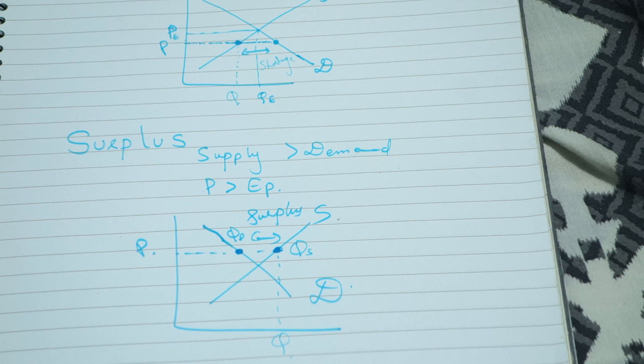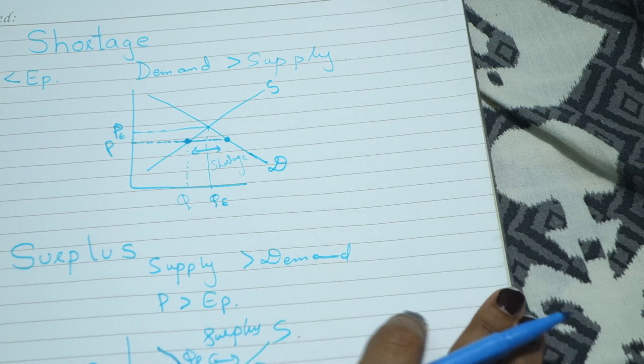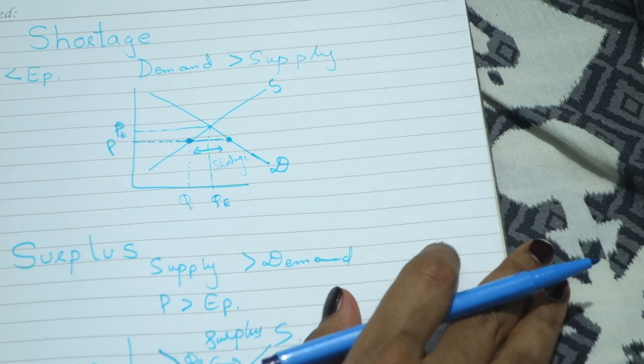Apni products kam karte ho ya prices kam karte ho. Ya ek ya dusra alternative choose karte ho taaki aapki jo price wagairah hai wo equilibrium pe aaye.